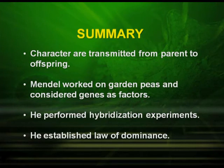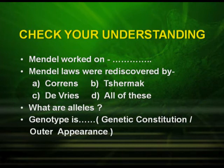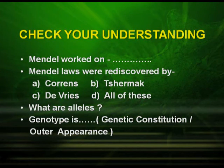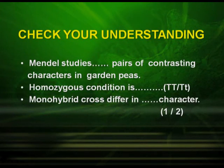In summary: characters are transmitted from parent to offspring; Mendel worked on garden pea and considered genes as factors; he performed hybridization experiments and established the law of dominance. Check your understanding: Mendel worked on which plant? Mendelism was rediscovered by Correns, Tschermak, de Vries, or all of these? What are alleles? Genotype refers to genetic constitution or outer appearance? How many pairs of contrasting characters did Mendel study? What is the homozygous condition — TT or Tt? A monohybrid cross differs in how many characters — one or two?